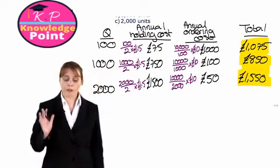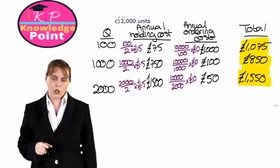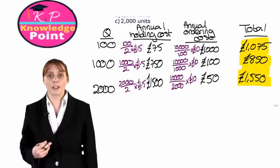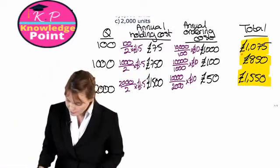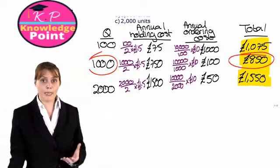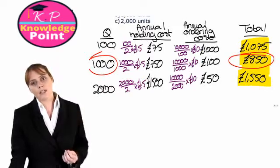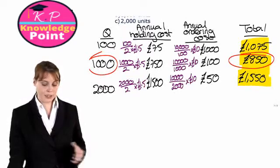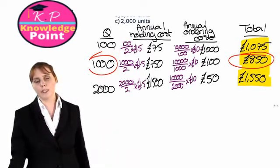Considering our three totals, as our order quantity increases our annual holding costs have gone up, while our annual ordering costs go down. Based on the table we've just calculated, the best thing for the company to do would be to order 1,000 units each time they place an order, as this appears to give the minimum total annual holding and ordering costs. But what if there is a different order quantity that minimizes the sum of these costs further? Without calculating every single order quantity, we don't really know which order quantity will minimize our costs.